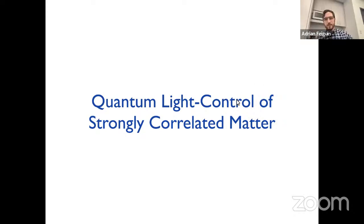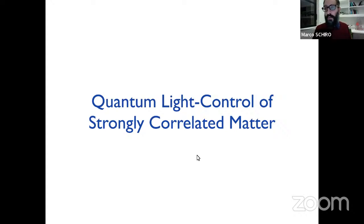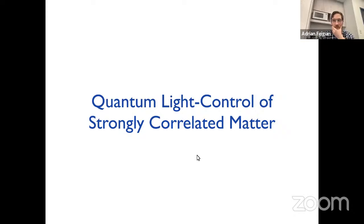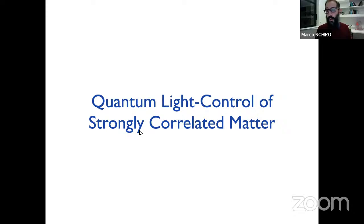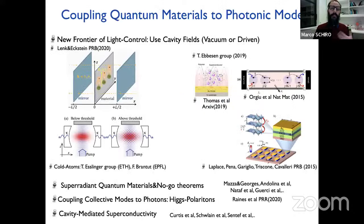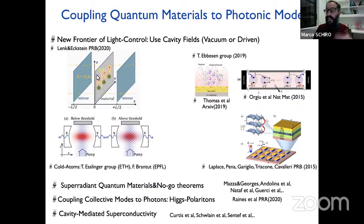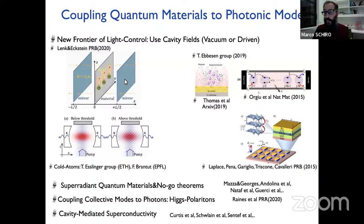Now let me switch gears to a different regime where light also plays the role of controlling quantum materials, but here we are talking about quantum fluctuations of the light field. This is a new frontier emerging in theory and experiment. The idea is to sandwich solid-state material between a cavity. In atomic physics, cavity QED has been extremely successful in controlling small quantum systems — achieving excellent entanglement between a single photon and a single qubit — and the idea is to do that with much more complex solid-state objects.